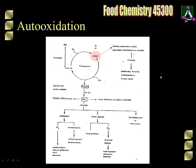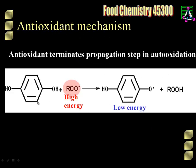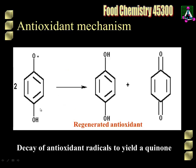The ROO dot can also react with a phenolic antioxidant. The ROO dot radical is high energy; the phenolic radical produced is very low energy and does not go through initiation or propagation. However, two of those low energy phenolic radicals will react with each other to produce a quinone — which is not useful in anti-oxidation — but it also regenerates another molecule of antioxidant that can then go back and do further anti-oxidation. So we're going from high energy radicals R dot and ROO dot to low energy radicals, which react to produce the quinone and the regenerated antioxidant.